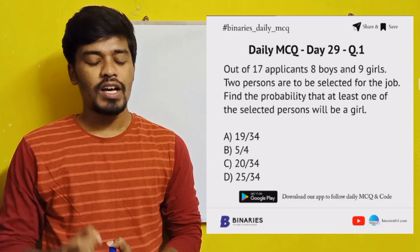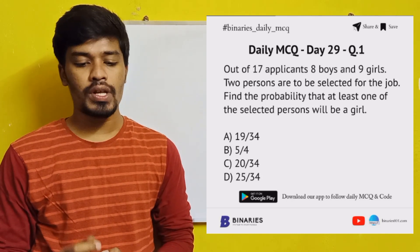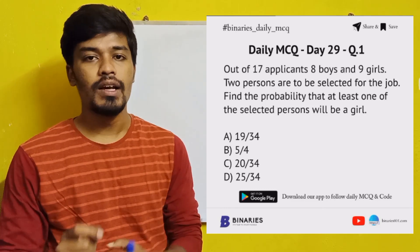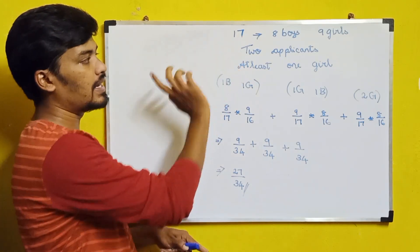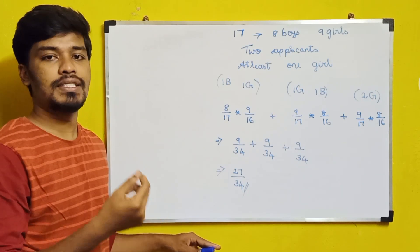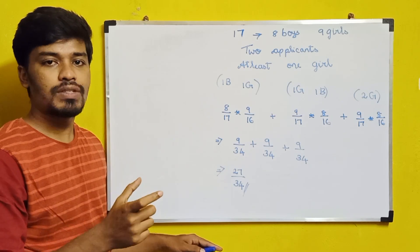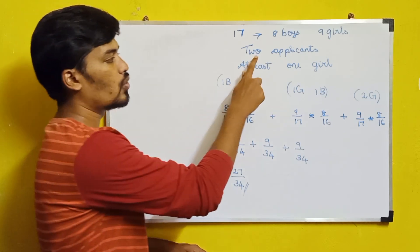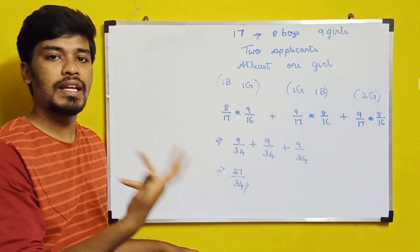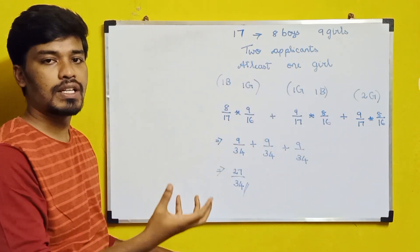The first question: out of 17 applicants there are 8 boys and 9 girls. Two persons are to be selected for the job. Find the probability that at least one of the selected persons will be a girl. So in this interview there are 17 applicants — 8 boys and 9 girls — and we have to select two applicants such that at least one of them is a girl. With this condition there are three events occurring.